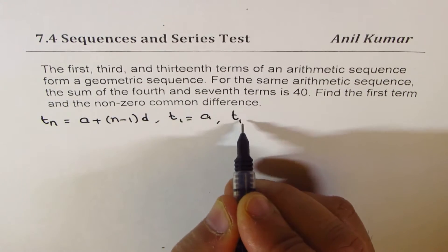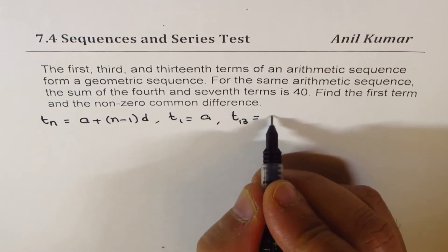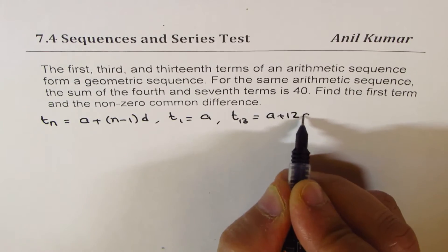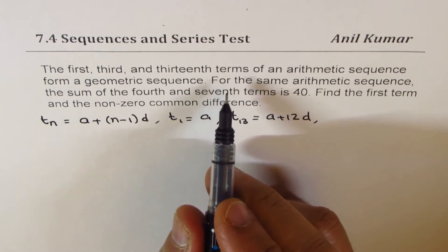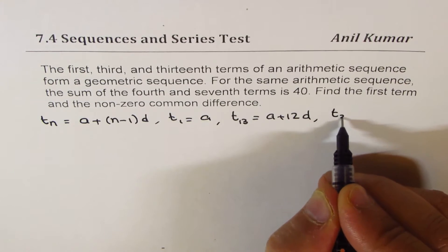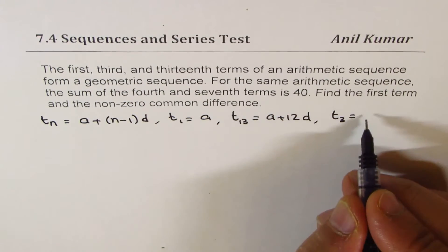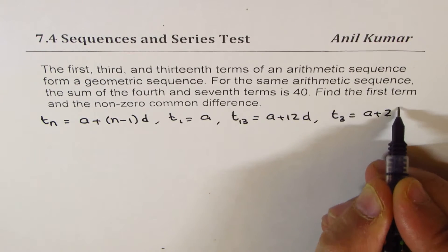The thirteenth term, that means 13 minus 1 is 12, so we get a plus 12d. And then the third term, which I missed in between, will be a plus 2d.